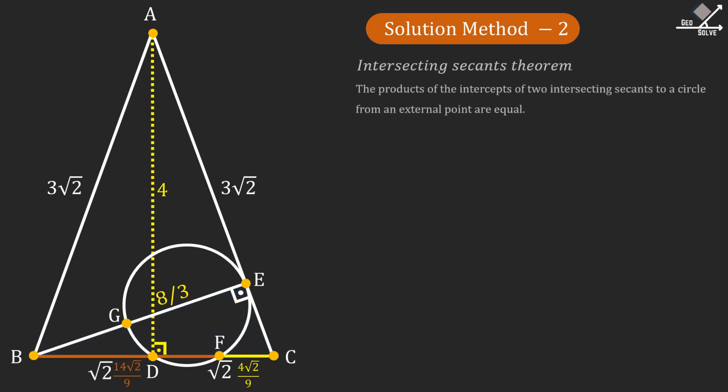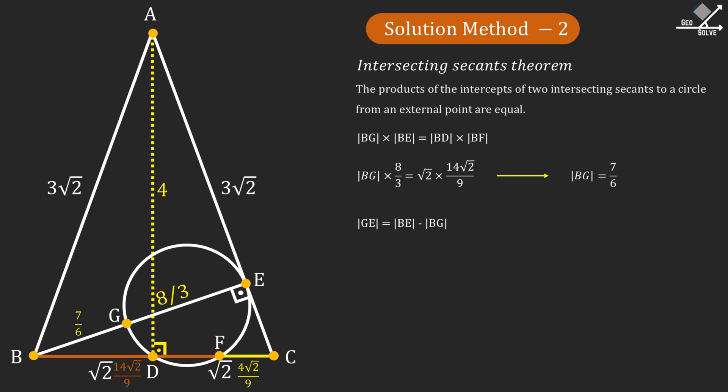Now let's remember the intersecting secants theorem, which states that the products of the intercepts of two intersecting secants to a circle from an external point are equal. In our case, we can apply this as BG times BE equals BD times BF. Putting in the values we know, we will have BG times 8 over 3 equals square root of 2 times 14 square root of 2 over 9. From here the length of line segment BG can be found as 7 over 6 units. And we can see that GE equals BE minus BG, so GE can be calculated as 3 over 2. Line segment GE is perpendicular to line segment AC at tangent point E, which means that GE is actually the diameter of the circle. And from here the radius R of the circle can be found as 3 over 4 units.